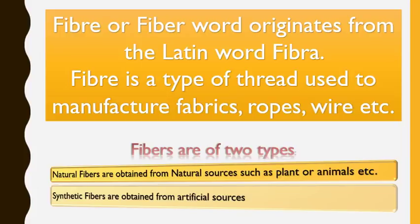ropes, wires, nets, and so many other things. Fibers are of two types: one are the natural fibers, which are obtained from natural sources such as plants or animals, and the other are synthetic fibers, which are obtained from artificial sources.